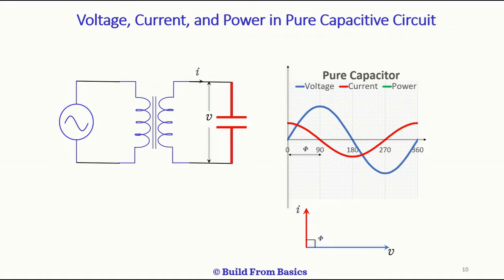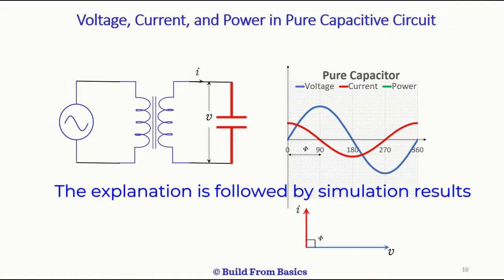The reason is: a capacitor is nothing but two conductors separated by a dielectric medium. So when a capacitor is connected across a voltage source, the voltage doesn't build up instantaneously. The capacitor starts charging slowly by taking current from the source. Therefore in a purely capacitive circuit, the voltage cannot increase in phase with the current, as the capacitor needs some time to charge. This makes the voltage follow the current, and the voltage reaches its peak value some time after the current does.